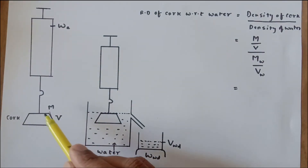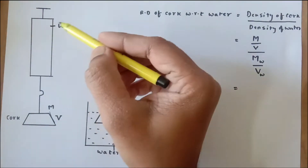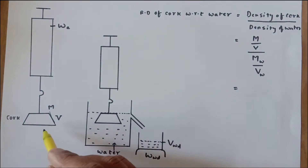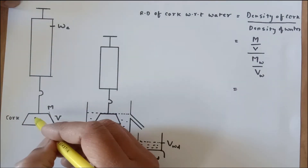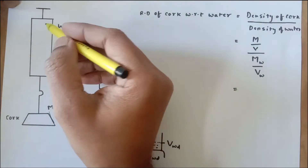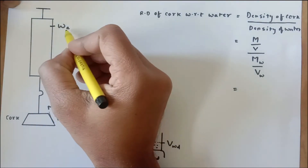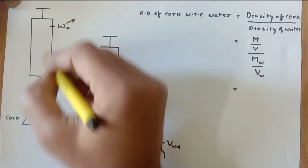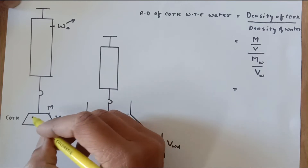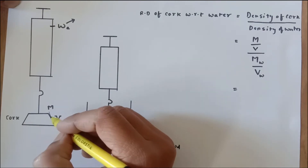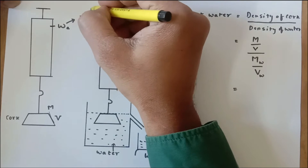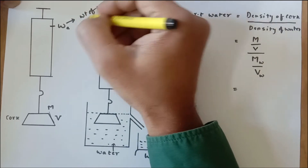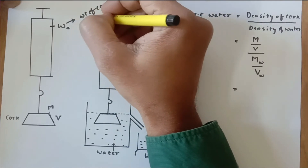This is the cork — you can understand this as a piece of wood also. This is the spring balance. What I have done is freely suspended this piece of wood or cork with the help of the spring balance. The weight in the air of this particular cork or piece of wood is recorded as WA — the weight of cork in air.